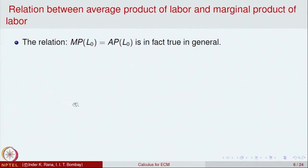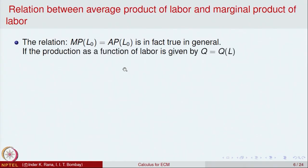Let us now find the general relation between the average product of labor and the marginal product of labor. The equality MPL = APL at the maximum of APL, which we verified for this specific example, is in fact true in general. Consider a general production function Q = Q(L) where production depends on labor L. The average product of labor is Q/L.